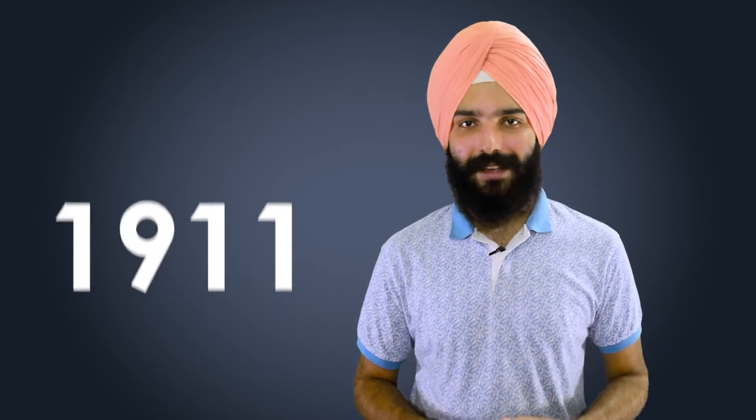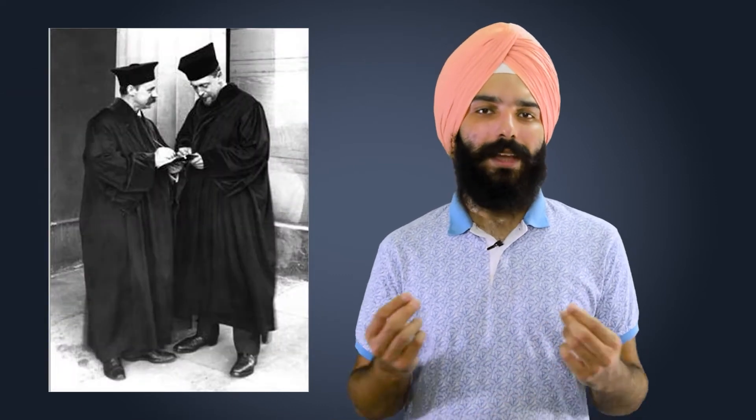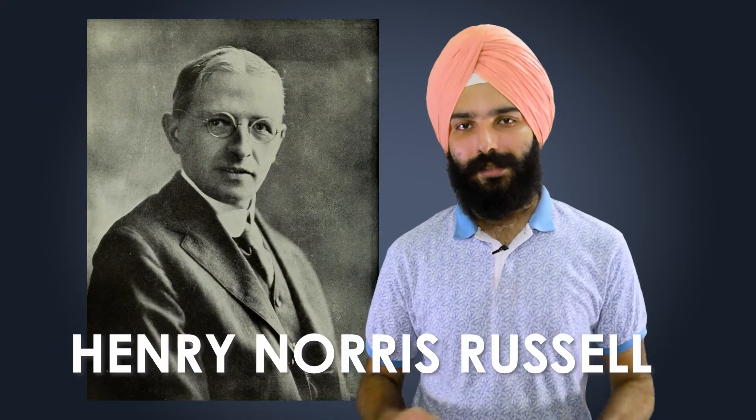The diagram was first developed from charts in the year 1911 by the Danish astronomer N.R. Hertzsprung and independently developed by the US astronomer Henry Norris Russell.